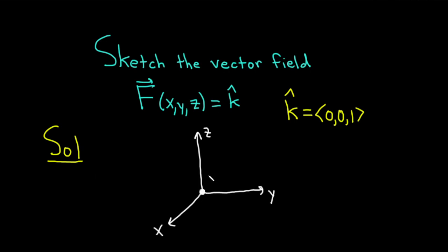So anywhere that I pick a point, if I pick a point here, I have the vector k-hat. So it's going to look something like this. If I pick a point here, I also have the vector k-hat, which looks something like this. Because the x-coordinate is 0, the y-coordinate is 0, the z-coordinate is 1, you're just going up 1.